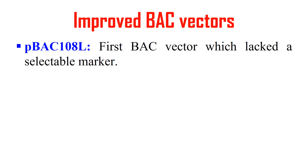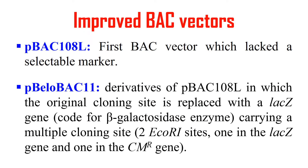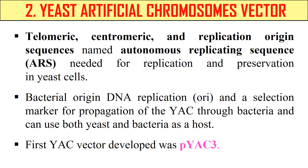There are some improved BAC vectors. The first vector was pBAC108L, which lacked a selectable marker gene — selection could only be done using colony hybridization. The improved version is pBAC11, made from pBAC108L. It now contains a selectable marker gene, the lacZ gene, which codes for the enzyme beta-galactosidase. This gene helps in the selection of host cells containing the BAC vector.